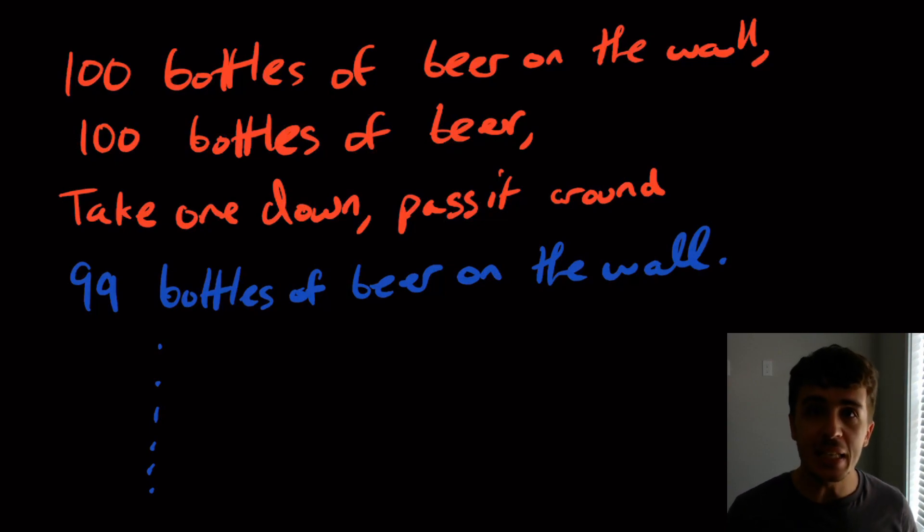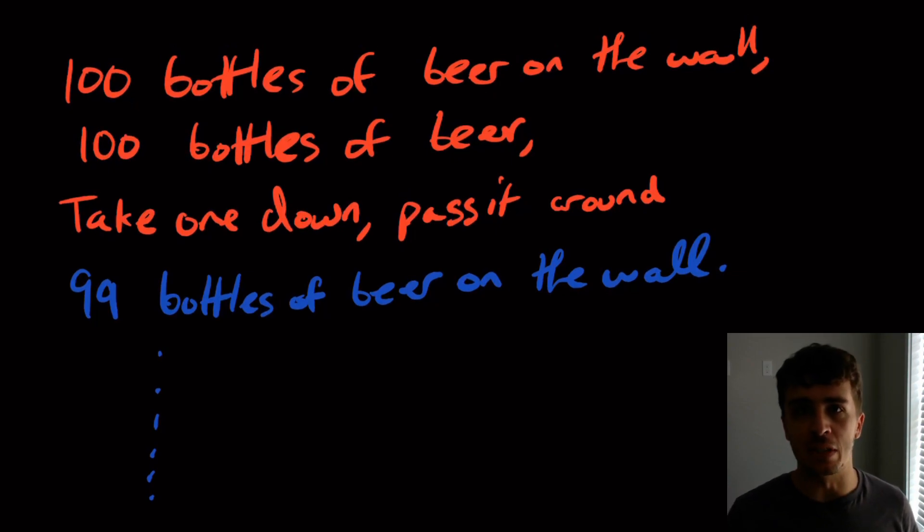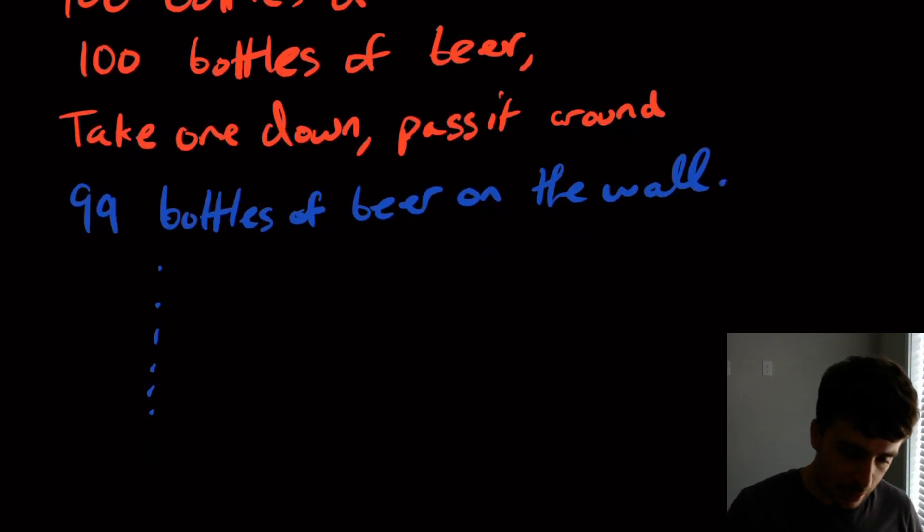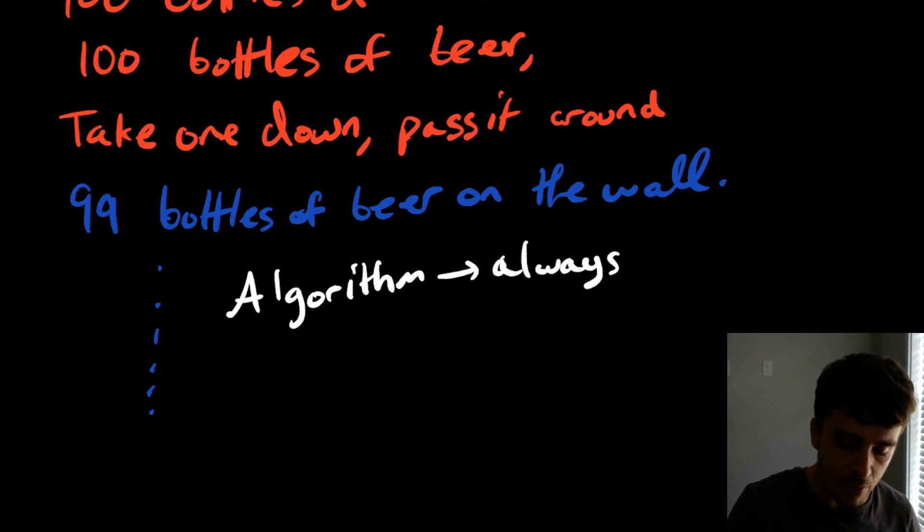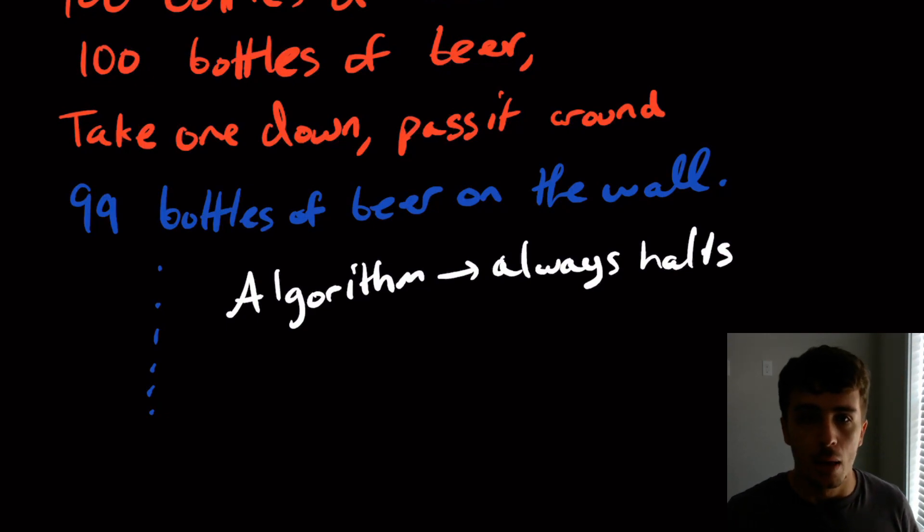So what is an algorithm, to give a short answer, is an unambiguous set of instructions that allows whatever you're doing to run in a finite amount of time. It always stops, no matter what. So that's something we should clear up right here. An algorithm always halts. So that's the property of an algorithm.